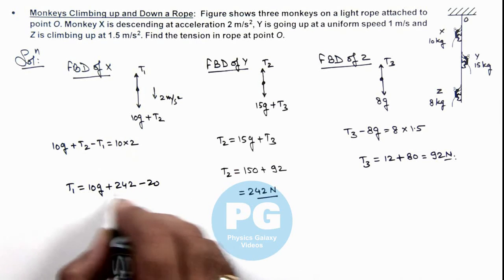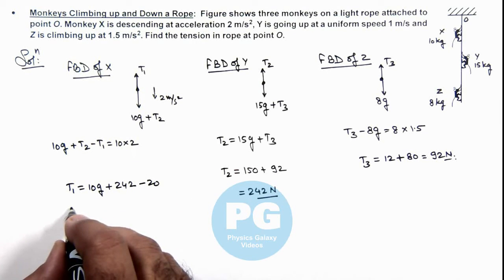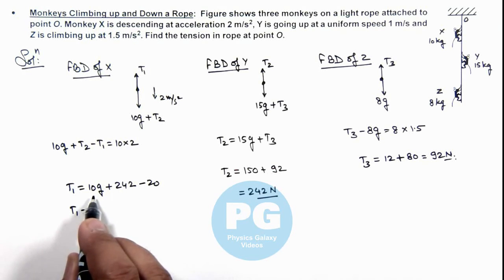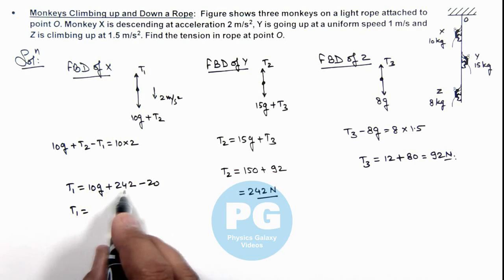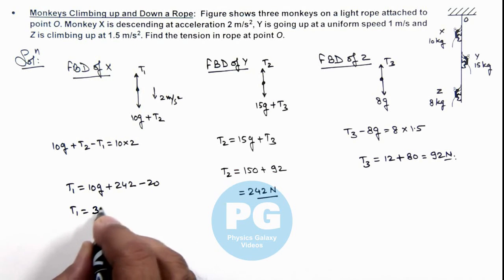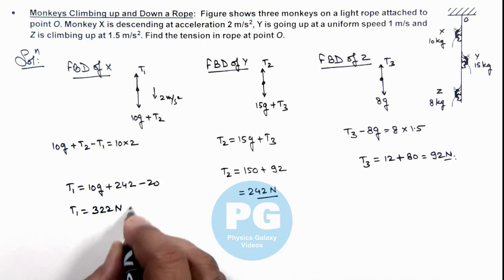So here we can see the value of T1 we are getting is 242 plus this will be 342 minus 20, so the result we are getting is 322 Newtons. That will be the final result of this problem.